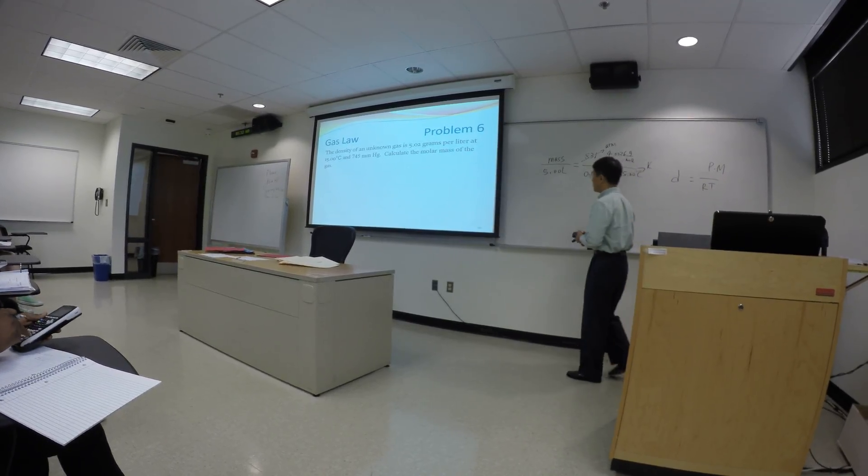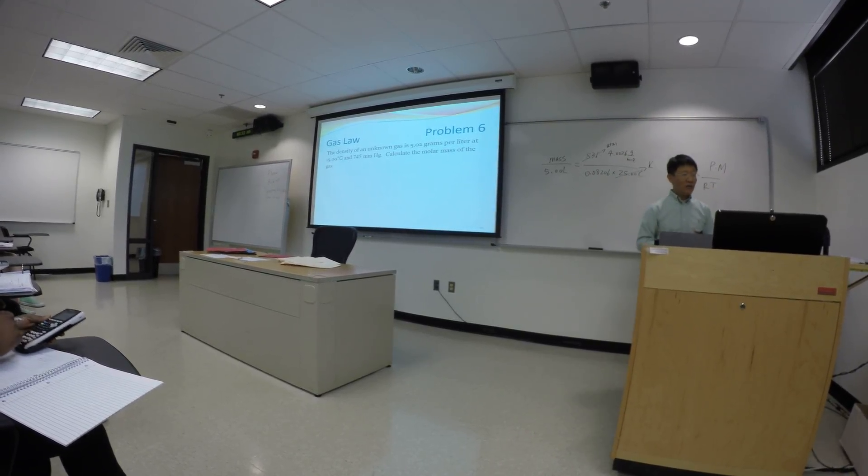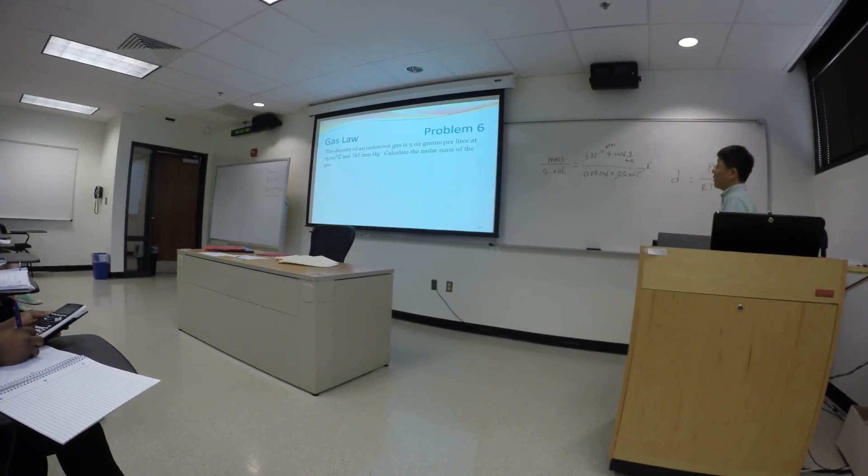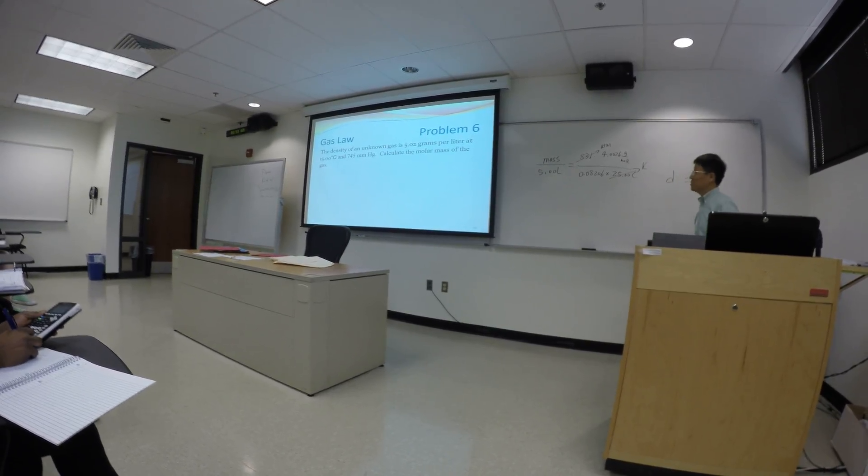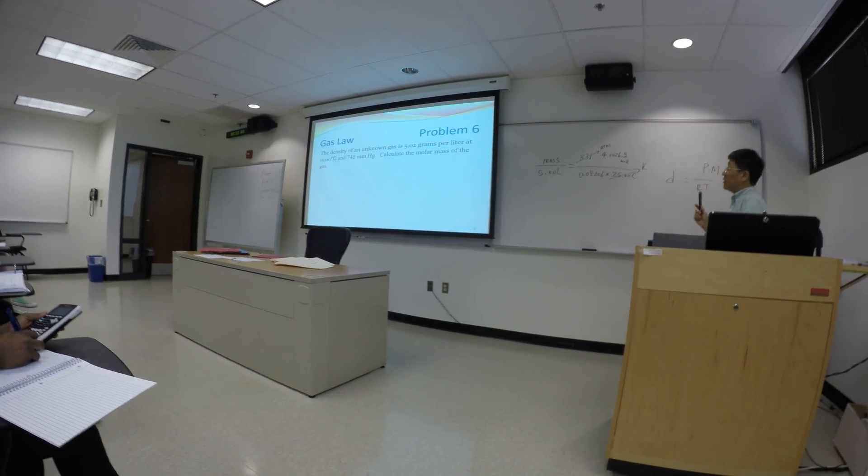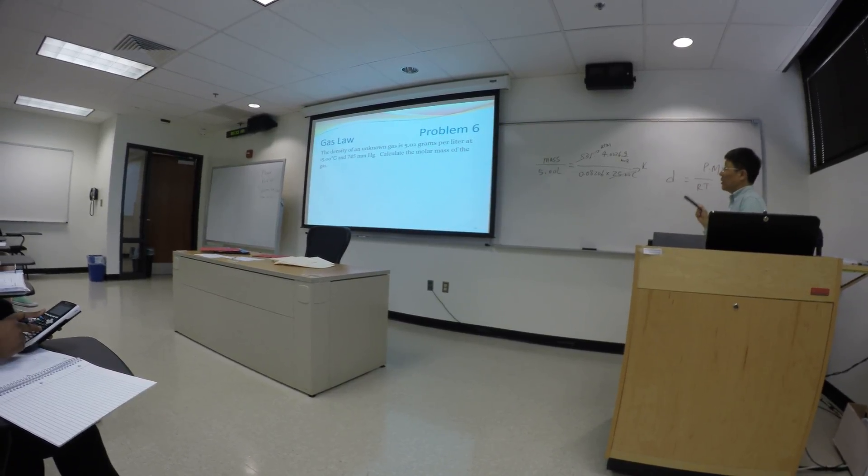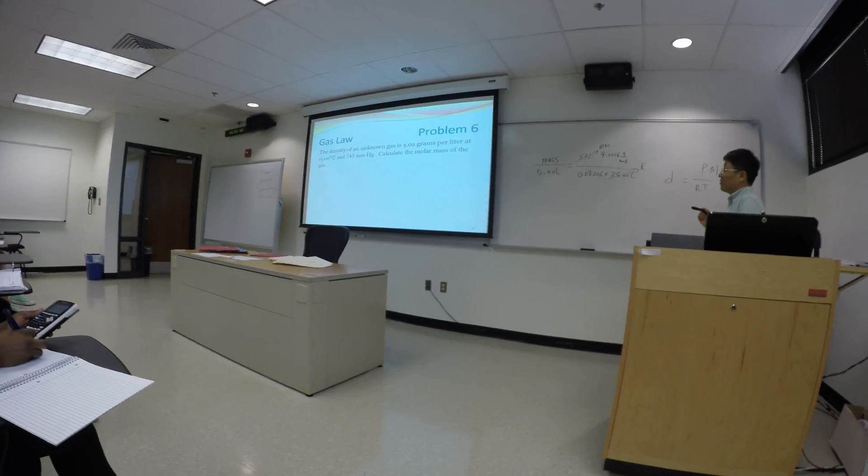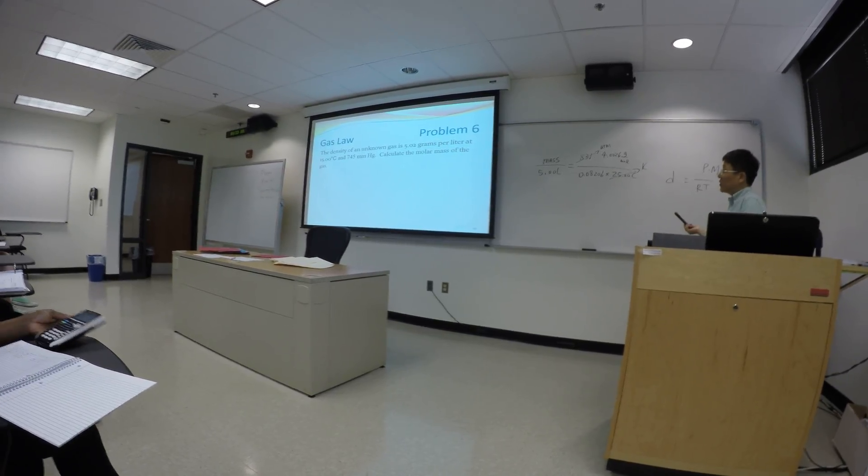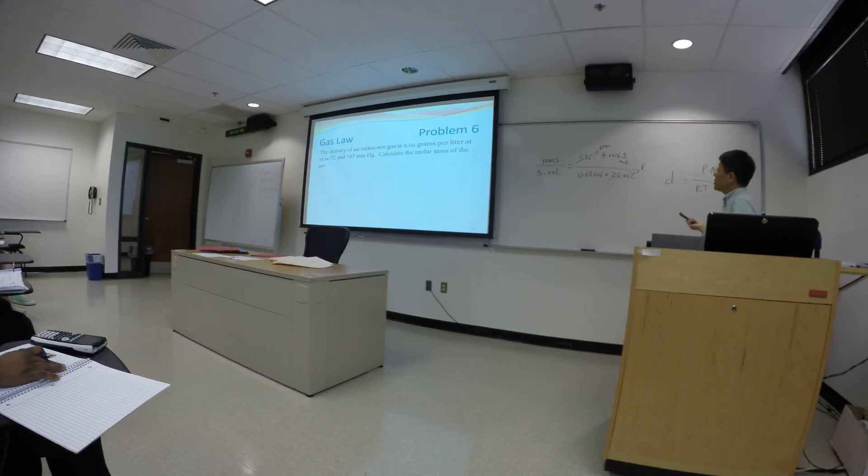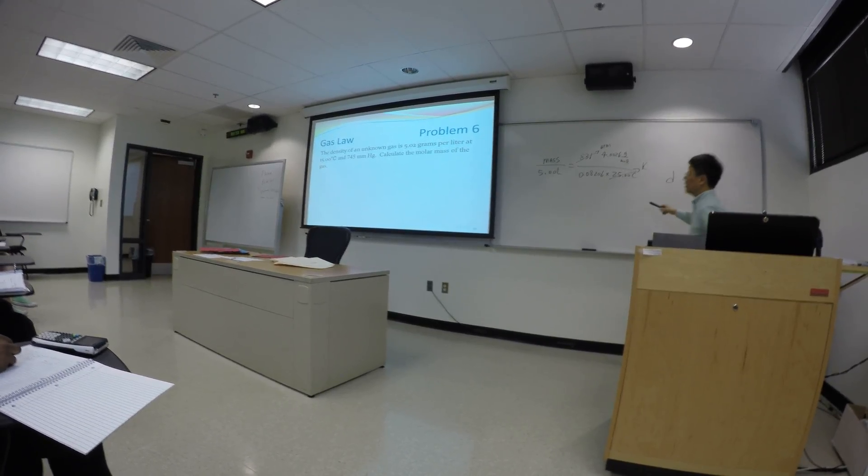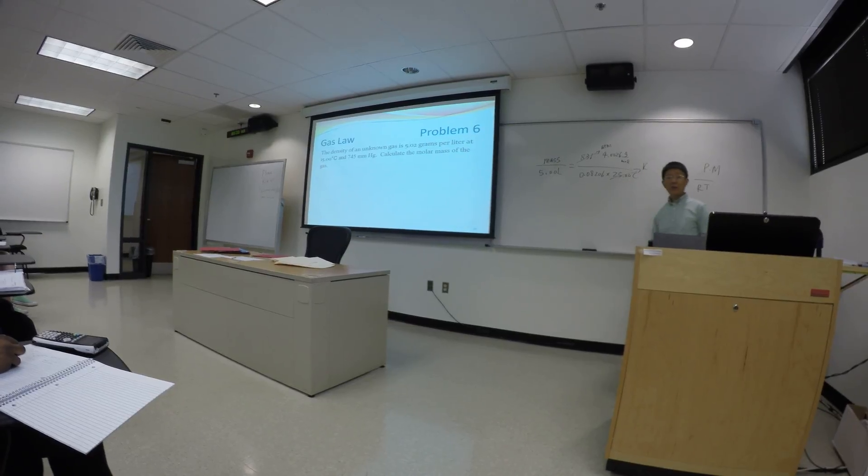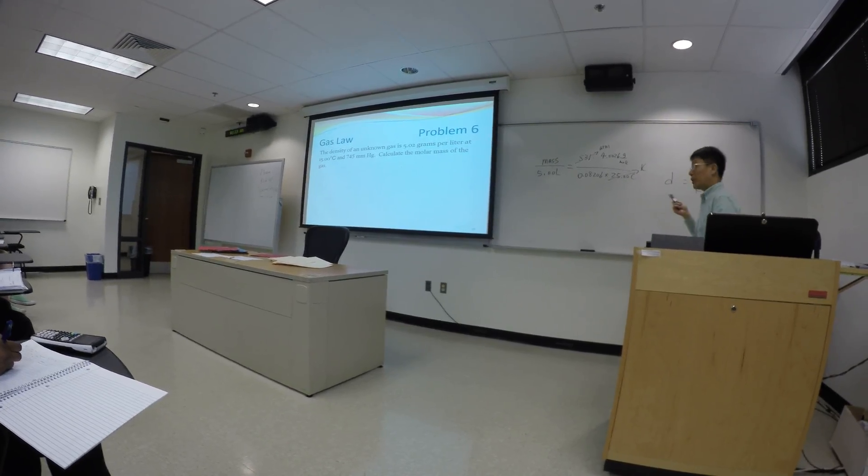Another trial problem. We're never tired of trying different types of questions here. The density of an unknown gas is 5.02 gram per liter, 15 degrees Celsius, 745 millimeter mercury. Calculate the molar mass. Very much similar to the previous, not the helium question, but the one prior to that.